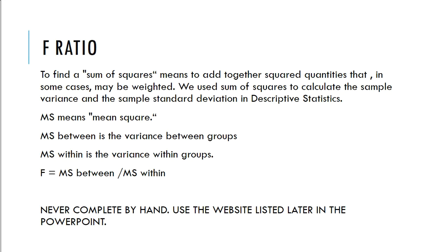MS is the mean squared. MS between is the variance between groups. MS within is the variance within groups. So F equals MS between over MS within.